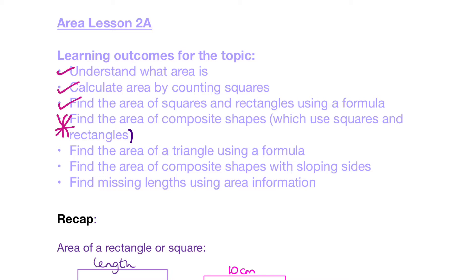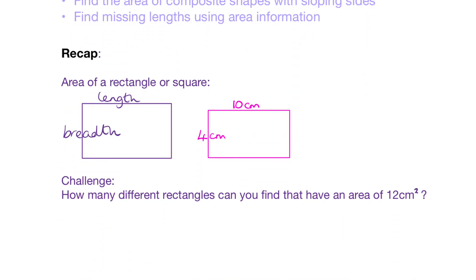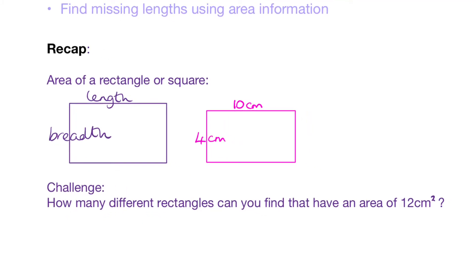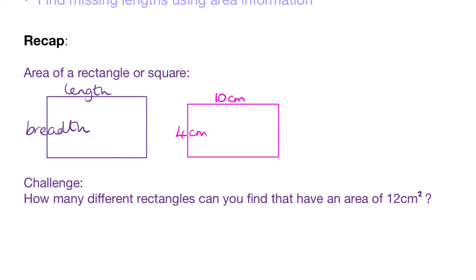So we're going to go on first of all and recap what we've done before on areas of squares and rectangles. When we're looking at finding the area of a square or a rectangle, we are using the length and the breadth of the rectangle. The length we usually take to be the one that goes across the way. It doesn't matter which is which, because when we're finding the area of a rectangle, we're multiplying the length and the breadth. It doesn't matter what order you're multiplying, so it doesn't matter which one we call the length and which one we call the breadth. Our formula for area of a rectangle is A equals L times B.